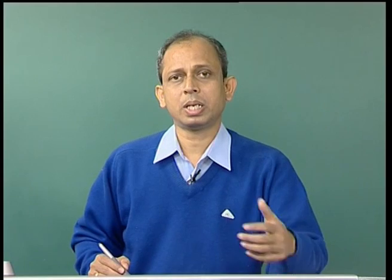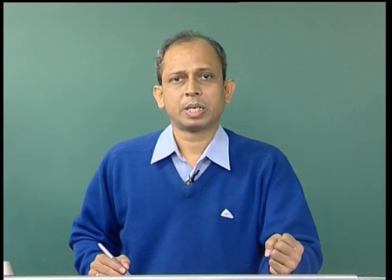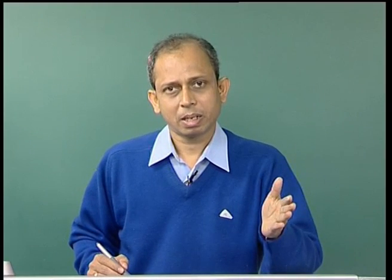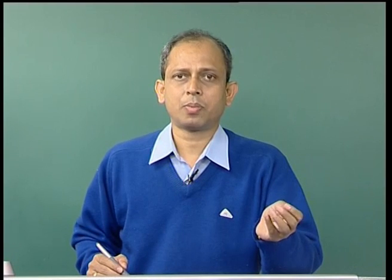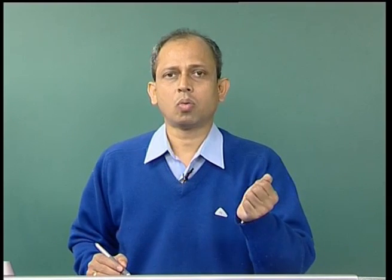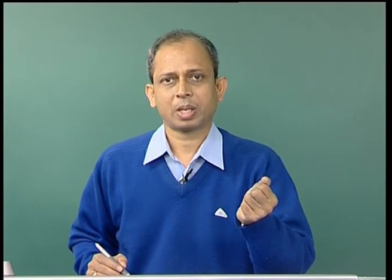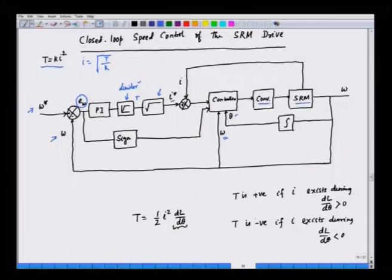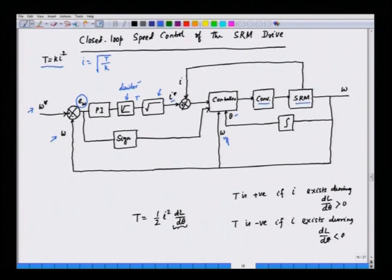The current I* is injected into the SRM by means of a converter, and the controller decides the switching angle depending upon theta. The SRM can be operated at very low speed in chop mode, then after the base speed it operates with constant power, and beyond some speed we go for T·omega² = constant. These are the various modes of operation, decided based on speed. The speed is also fed as input to the controller to decide the mode of operation, and we have a speed sensor for closed-loop speed control.